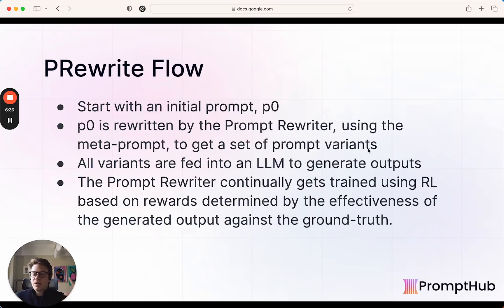And so generally what that all kind of comes together, you start with some initial prompt. That prompt is rewritten by the meta prompt prompt rewriter. They get a bunch of prompt variants from that. All the variants are fed into the LLM to generate outputs. And then the outputs are judged against the ground truth. They look at the rewards for that. And the prompt rewriter gets continually trained based on those rewards.